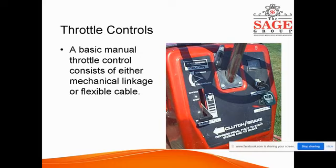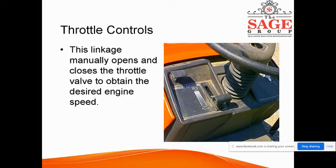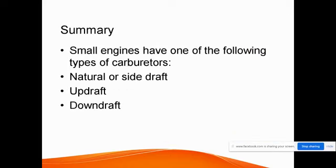Throttle controls consist of mechanical linkage or a flexible cable. The throttle control linkage manually opens and closes the throttle valve to obtain the desired engine speed. This throttle is mainly controlled by linkages and wires.